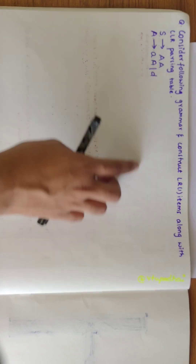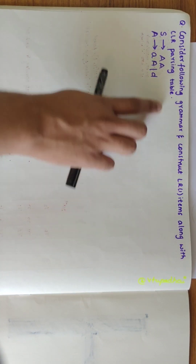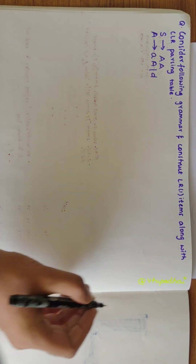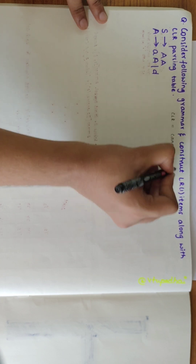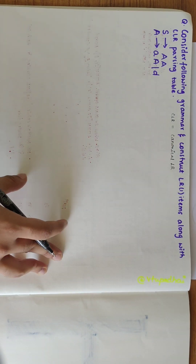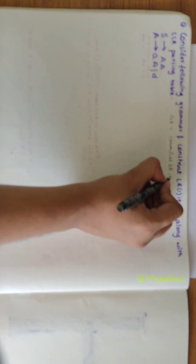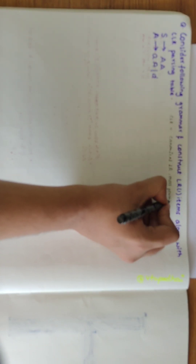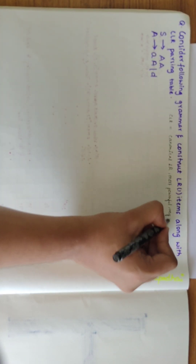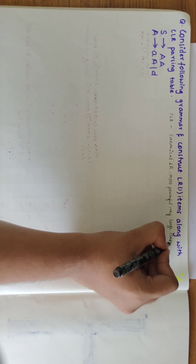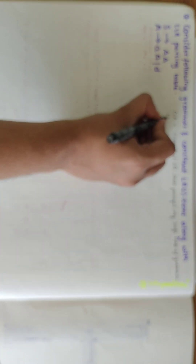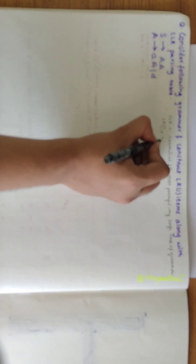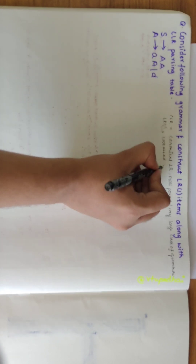In this video, we will be considering the given grammar and construct the LR1 items along with the CLR parsing table. CLR can be defined as Canonical LR. It is the most powerful compared to SLR and LALR, and it works on a very large class of grammars. Here, the '1' in LR1 represents the lookahead value.